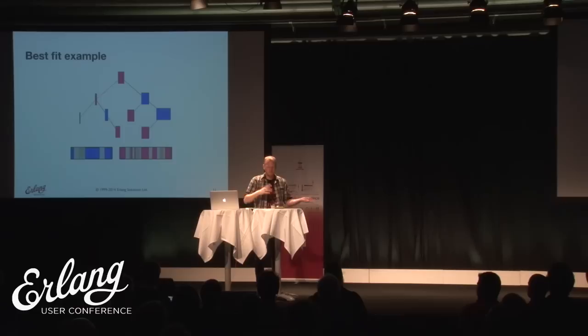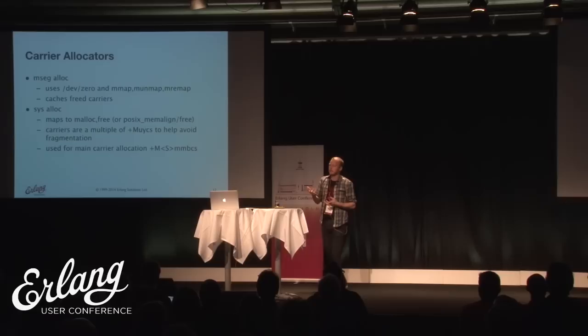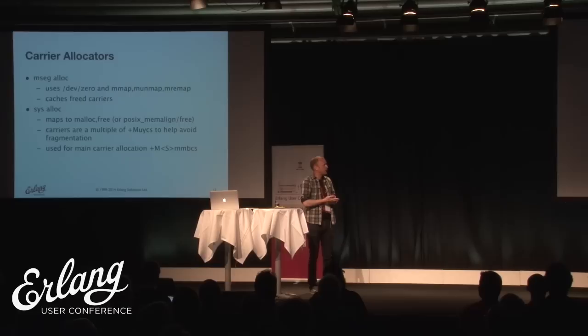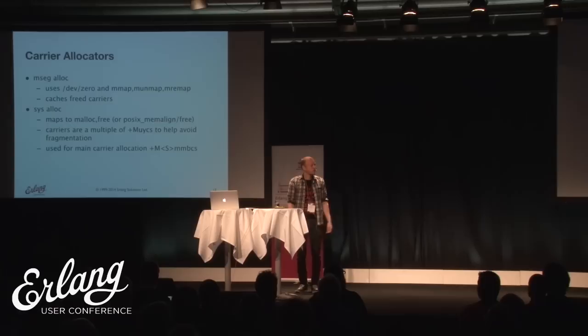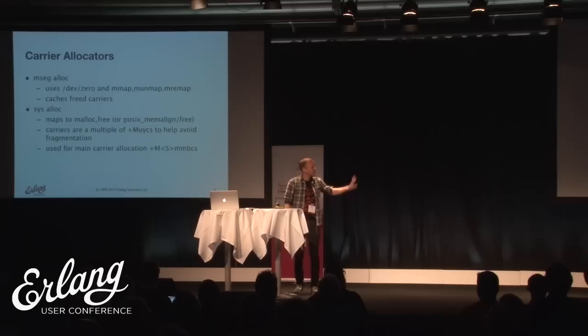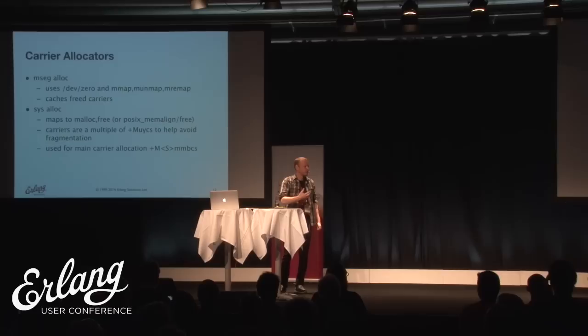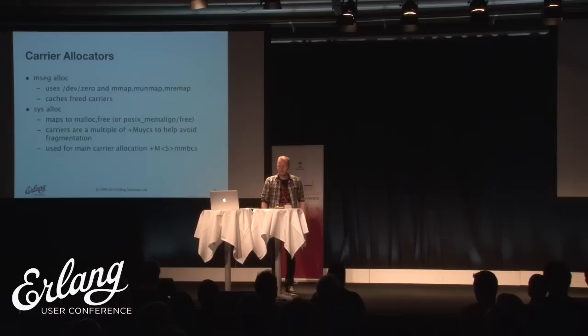When requesting carriers from the OS, there are two mechanisms. The segment allocator, mseg_alloc, uses mmap with /dev/zero on Linux, VirtualAlloc on Windows, and similar techniques on other OSes - typically allocating aligned segments of 2 to 16 megabytes. SysAlloc maps to malloc or a POSIX equivalent, which is slower because malloc itself involves tree searches within blocks. So mseg_alloc is simpler and faster to use.